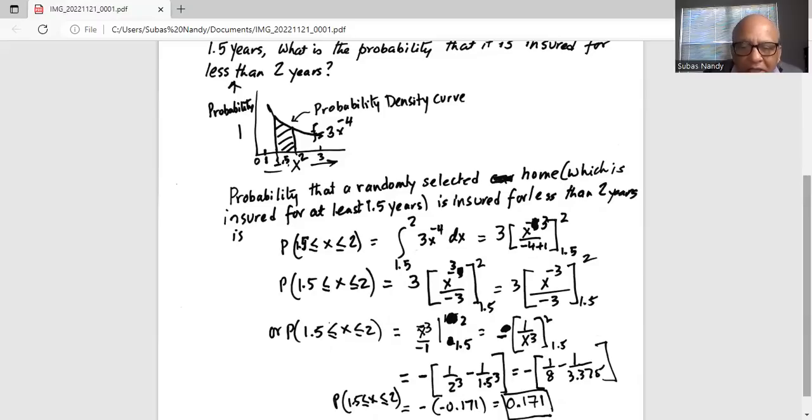Which is minus outside the parenthesis is 1 over 2 cubed minus 1 over 1.5 cubed, which is minus outside parenthesis 1 over 8 minus 1 divided by 3.375.